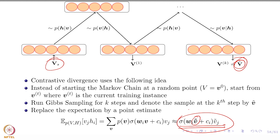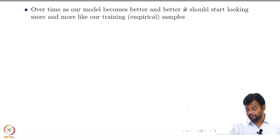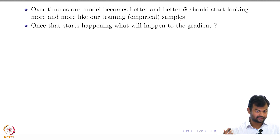There are three key ideas here. One: instead of starting from a random point, start from a true training sample. Two: instead of running the Gibbs chain for many many time steps, just run it for K steps, where K is a small value. Three: instead of approximating the expectation by a summation over many samples, approximate it by a single point estimate. The main advantage is that you are starting from a point in the chain which is already reliable.